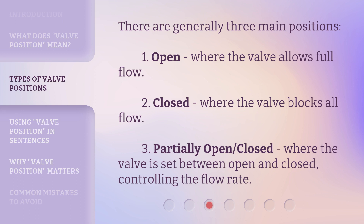There are generally three main positions. First, open — where the valve allows full flow. Second, closed — where the valve blocks all flow. Third, partially open, where the valve is set between open and closed, controlling the flow rate.